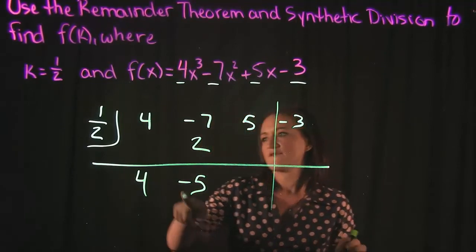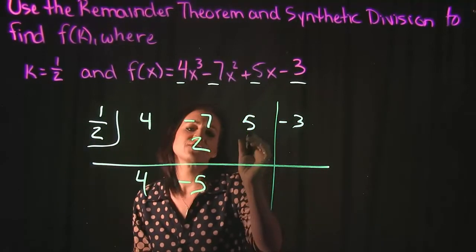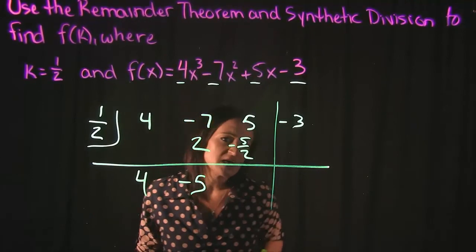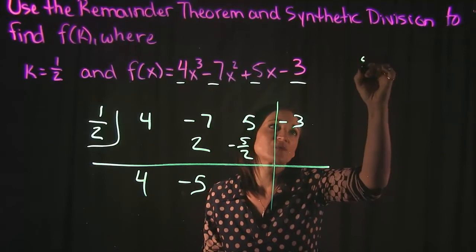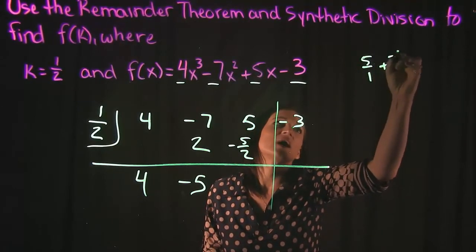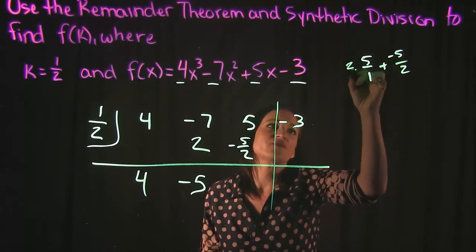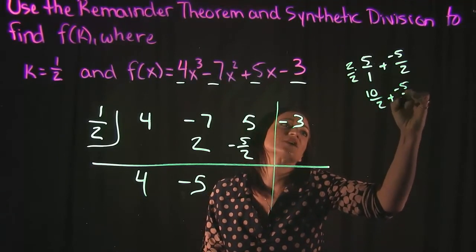Then we do negative 5 times a half gives us negative 5 halves. Then we need to add 5 plus a negative 5 halves, right? We can do that addition off over here to the side just real quickly here.